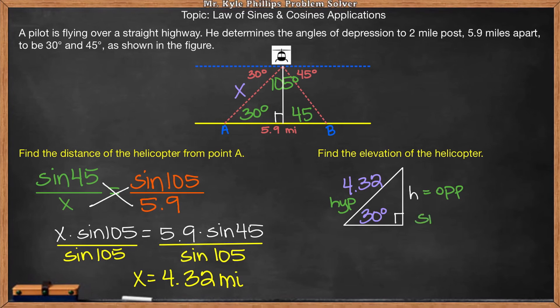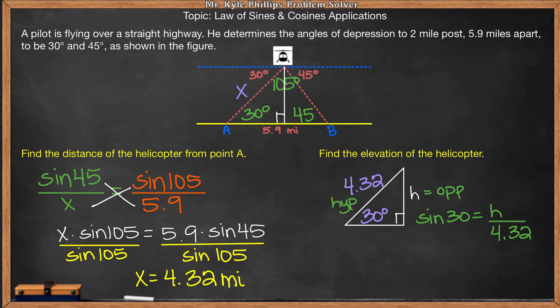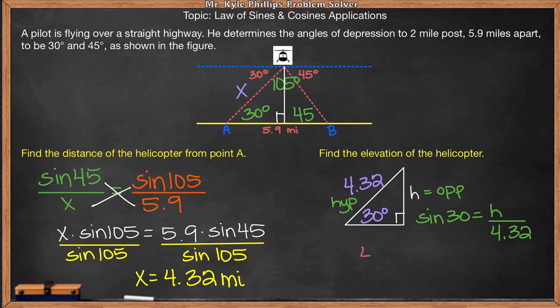So we know that sine of 30 degrees should equal the height over the hypotenuse of 4.32. So here if we want height by itself, which we do because we want the elevation of the helicopter, we have to isolate it. So we have to do the opposite of the operation. This is h divided by 4.32, so we will need to multiply by 4.32 on each side.